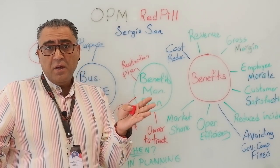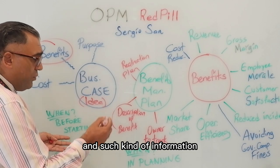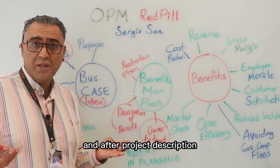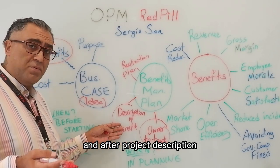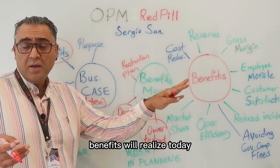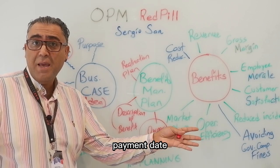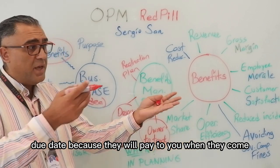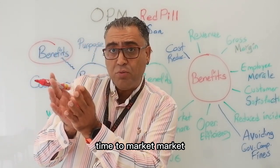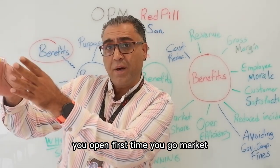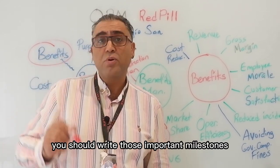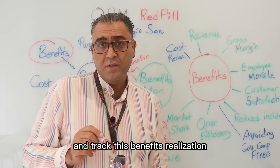The benefit management plan also includes a benefits map, benefit realization plan, benefit tracking plan, and information on who will track benefits throughout and after the project. Description, detailed description, milestones, important dates, when benefits are realized — maybe your customer payment date or product launch date, time to market. You should write those important milestones and track benefit realization.